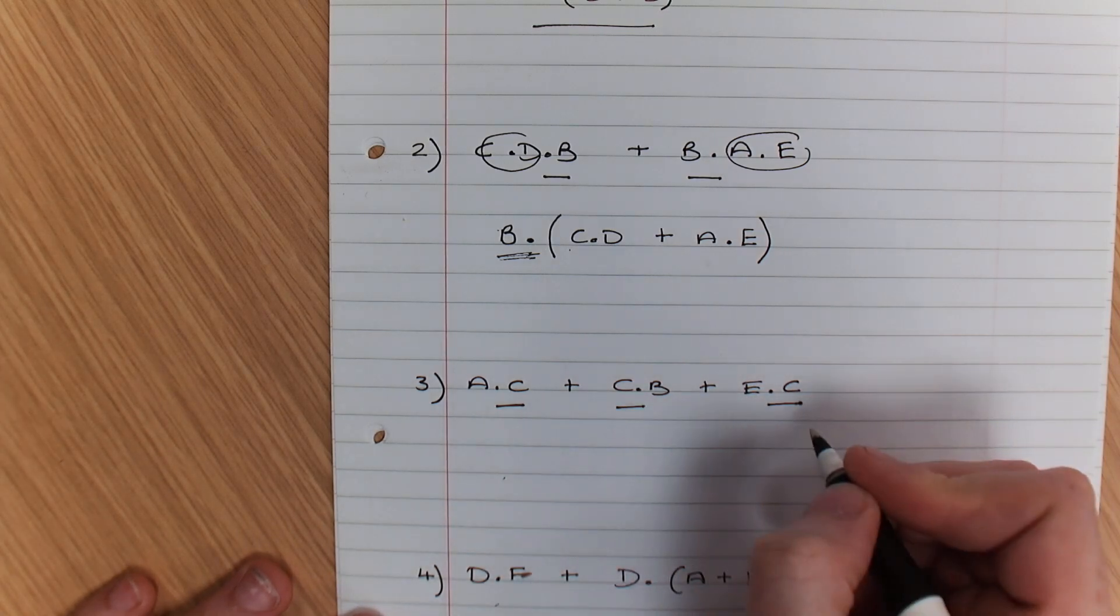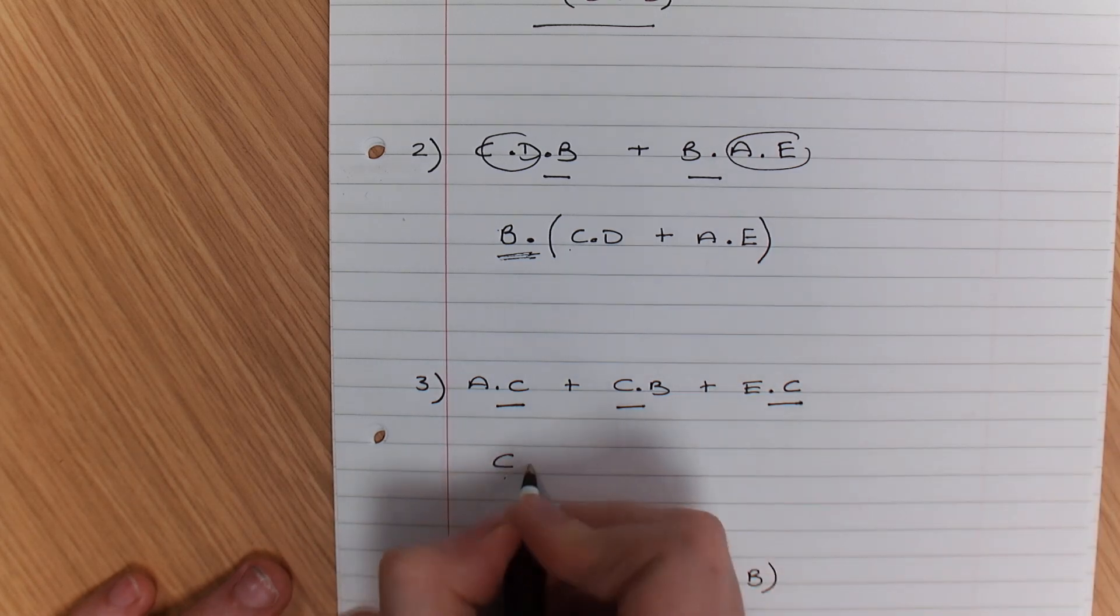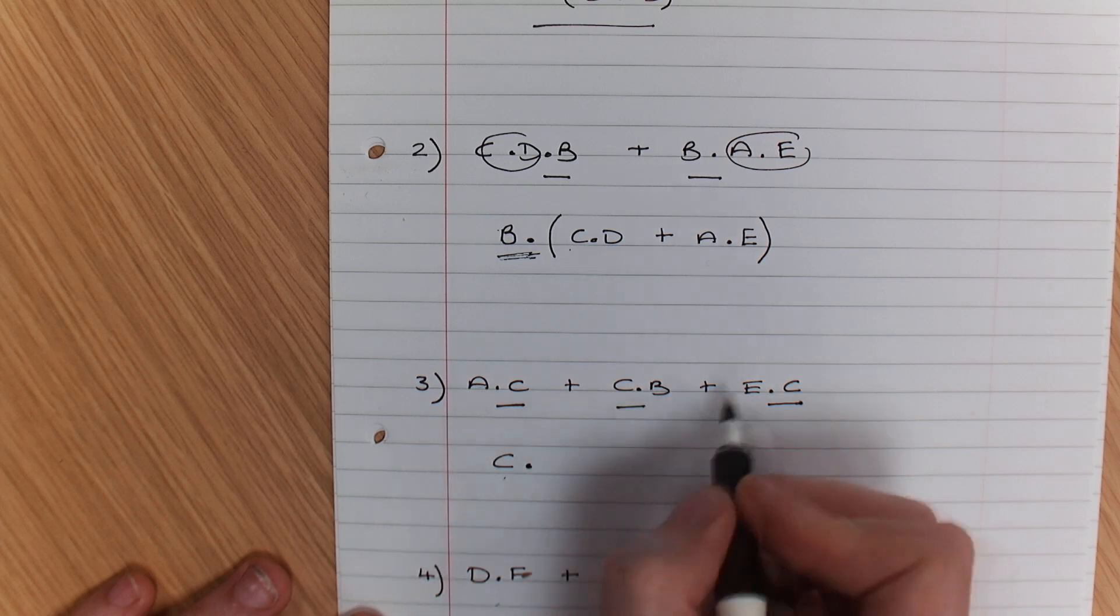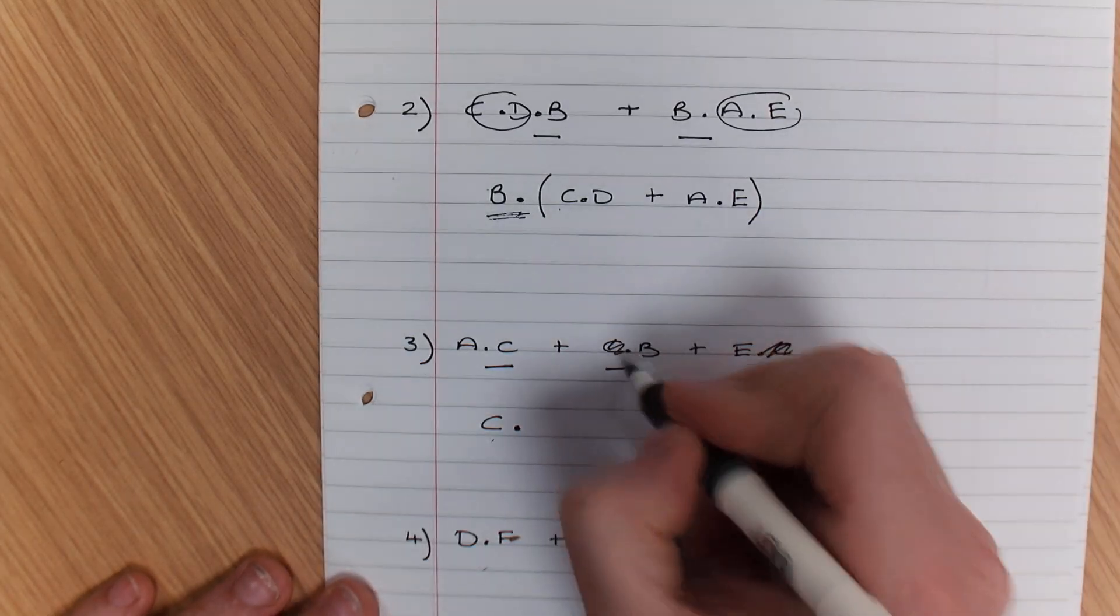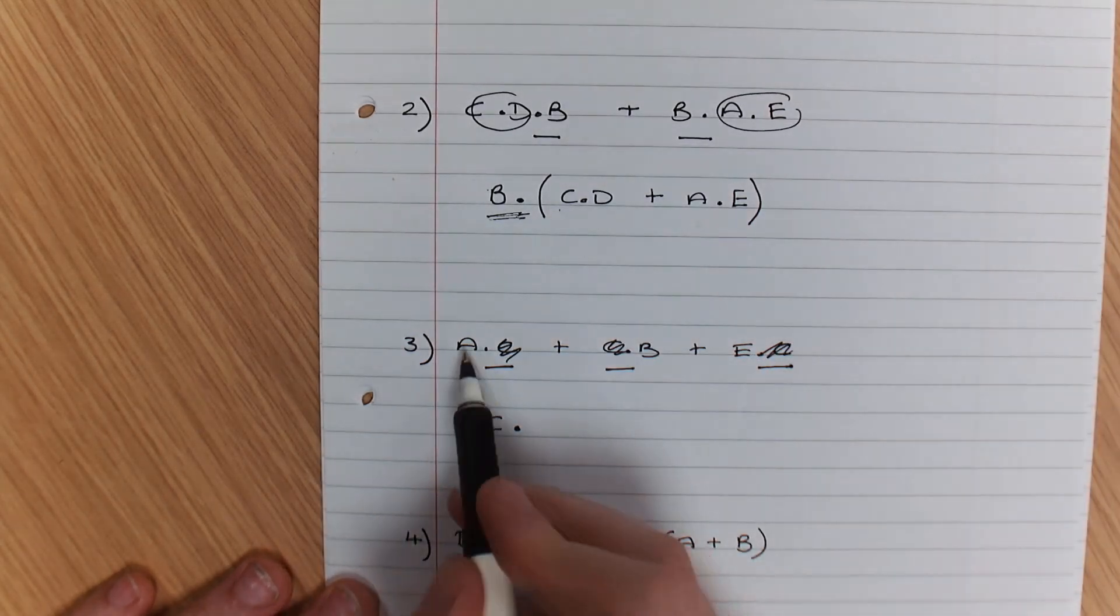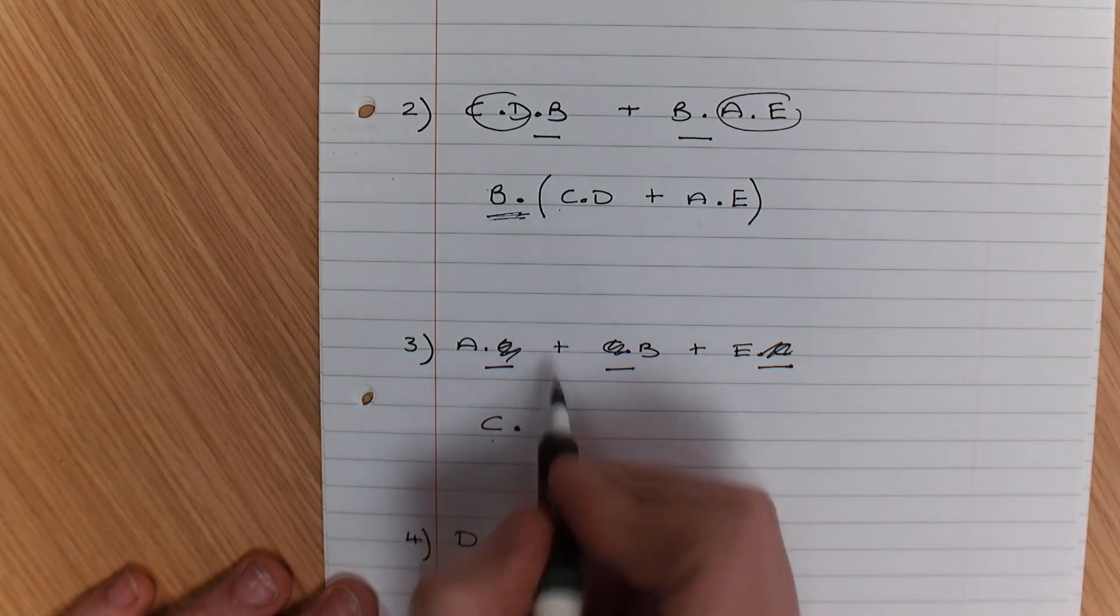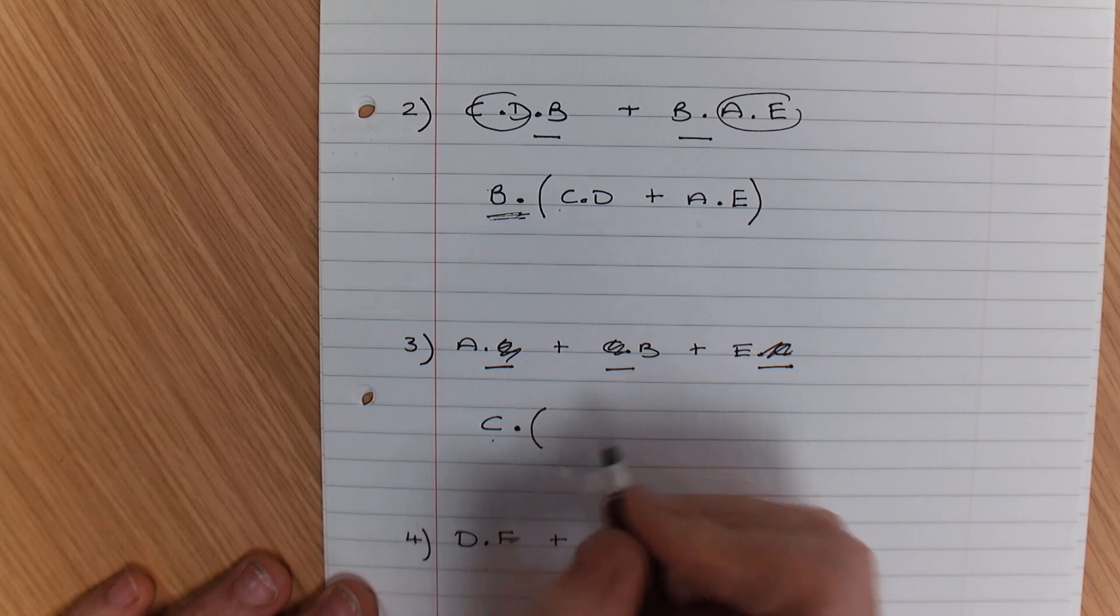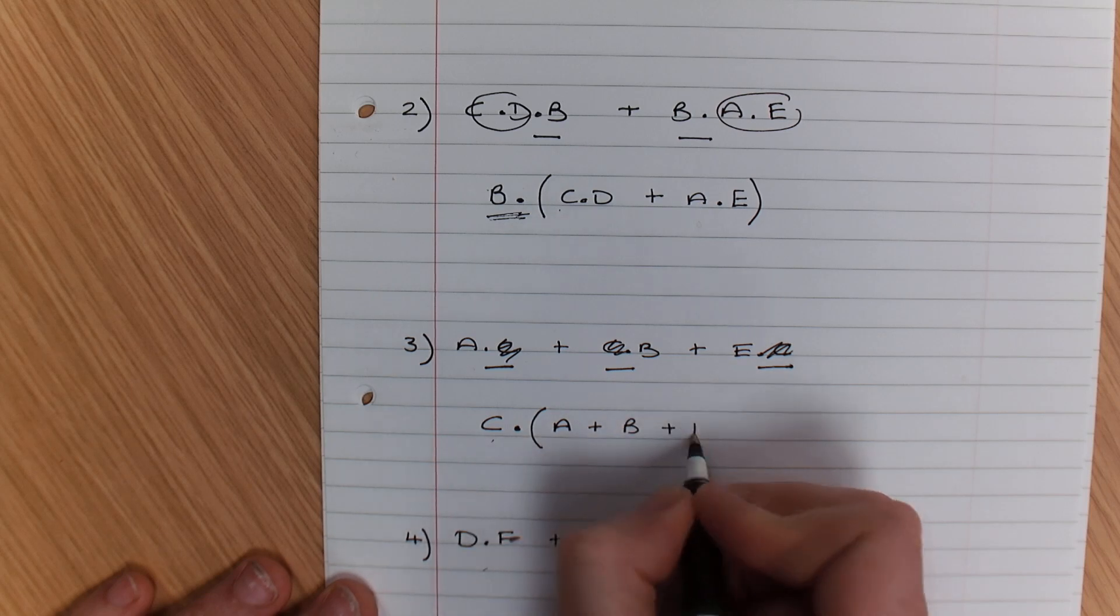What this is going to allow me to do is C and (A or B or E). Because we've used up the C here, we've used up this C, we've used up this C. That leaves us with A and B and E left over. So C and (A or B or E).